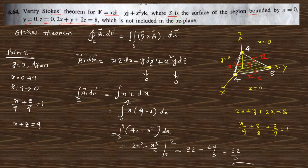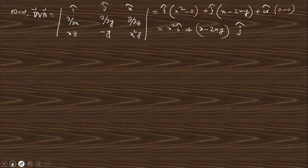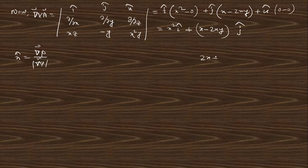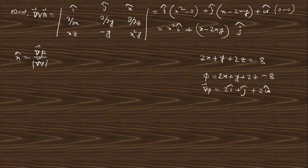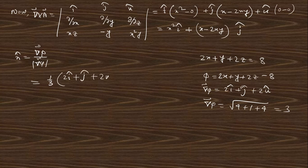Next, we need to find the unit normal n̂. Since the plane equation is 2x + y + 2z = 8, we have φ = 2x + y + 2z − 8. Then grad φ = 2i + j + 2k, and |grad φ| = √(4 + 1 + 4) = √9 = 3. Therefore n̂ = (1/3)(2i + j + 2k).